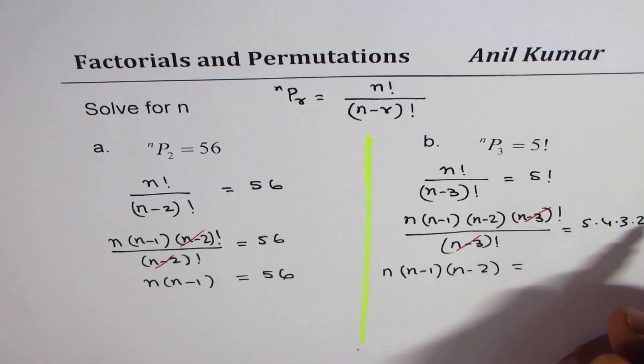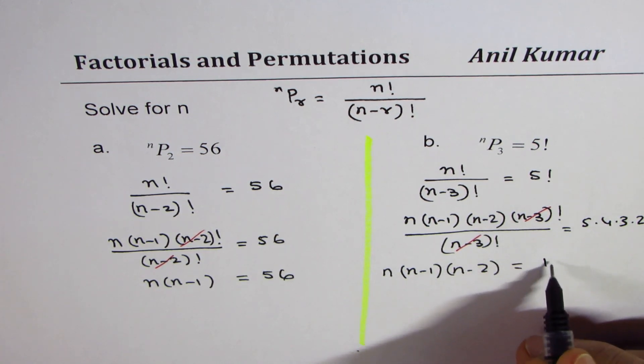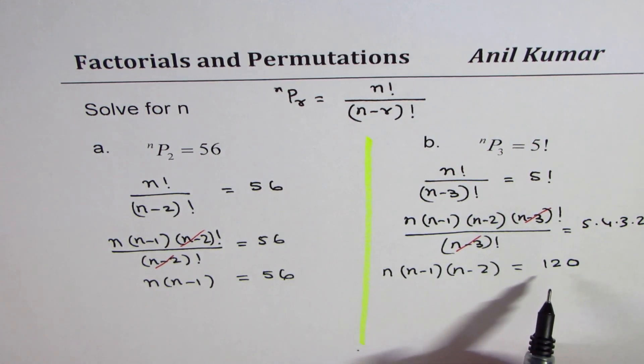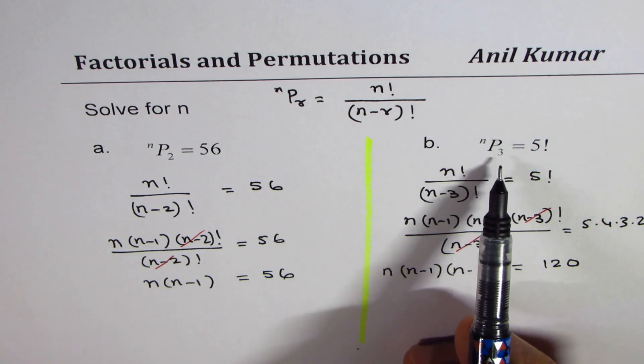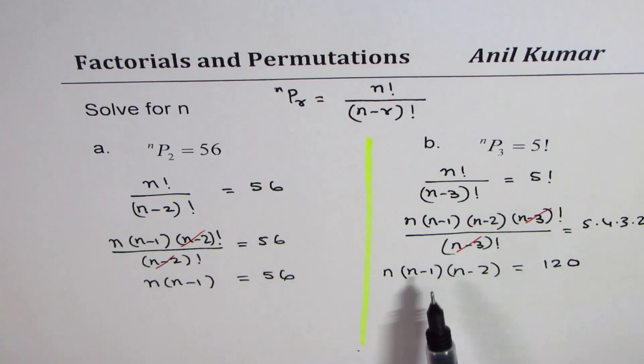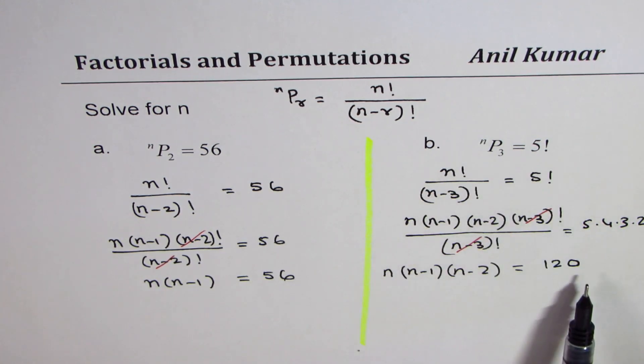This equals to 5 times 4 is 20, times 6 is 120. So you get a cubic equation. If I do nP4 you will get a quartic equation. So what really happens is that the r value in such questions may complicate your solution depending on what r is. If r is 5 you'll get a degree 5 equation here to solve.